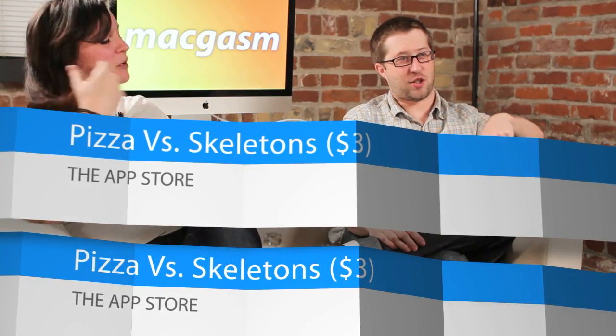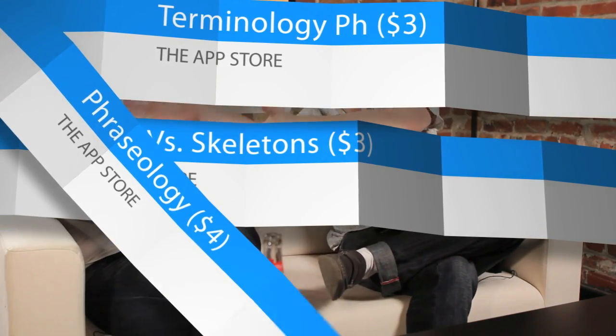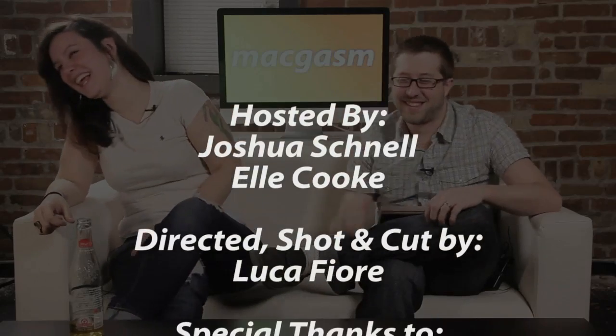So there you have it — Phraseology and Terminology for writing, and Pizza vs. Skeletons for gaming. You can find us at twitter.com/macasm, youtube.com/macasm, blip.tv/macasm, and macasm.net. I'm Al on Twitter as Elbeth, and I'm Joshua Schnell on Twitter. That's it for this week's episode — make sure you check us out and click the like button.